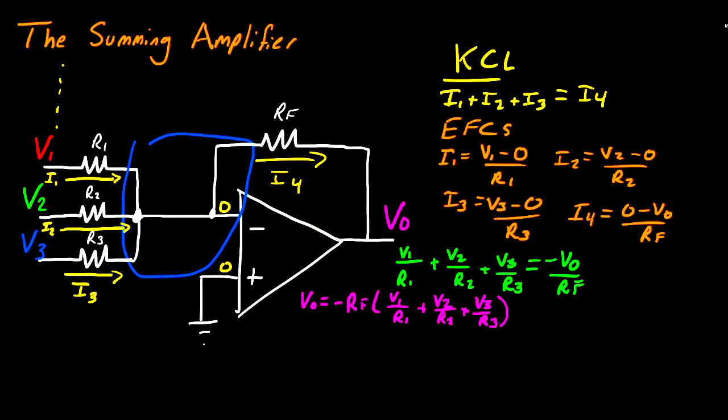So by choosing the values that we have for RF, R1, R2, and R3, we can scale the voltages and add them up together at the same time. One thing that's commonly done with this circuit is we'll say R1 is equal to R2 is equal to R3 and is equal to RF.